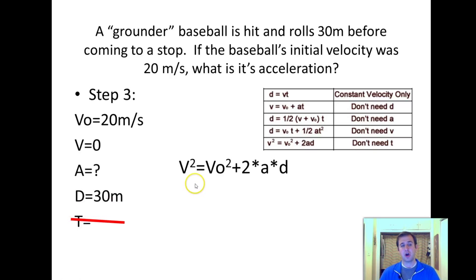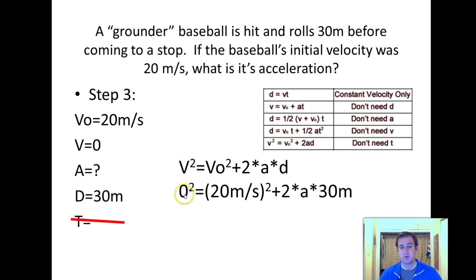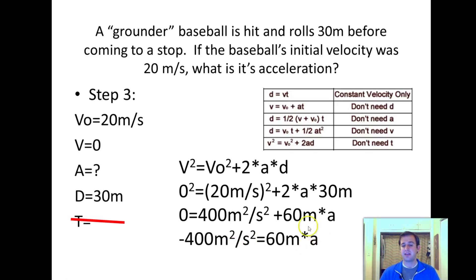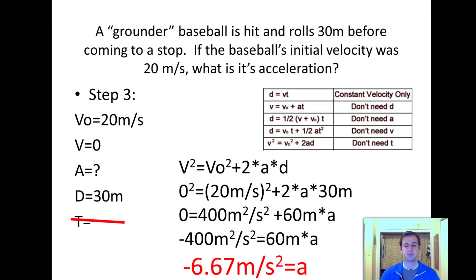Then we write down everything we know and solve. The ending velocity is zero, starting velocity was 20 meters per second, distance was 30. We square the 20, which gives us 400 meters squared per second squared — we get these weird units because we've squared everything. 2 times 30 is 60, so we have 60 meters. Solving for A: the 400 meters squared per second squared goes to the other side, we subtract it, then divide by 60, giving us negative 6.67 meters per second squared. Negative because the acceleration is in the opposite direction of travel.